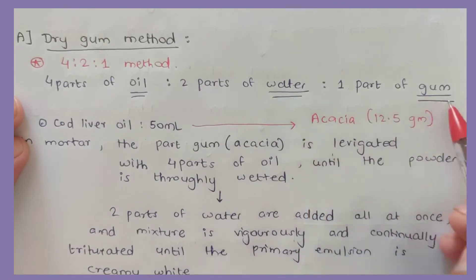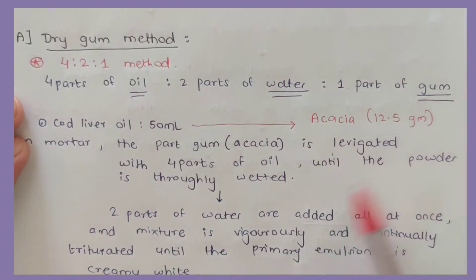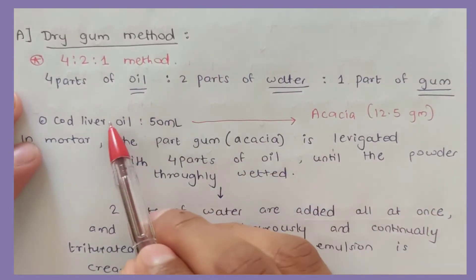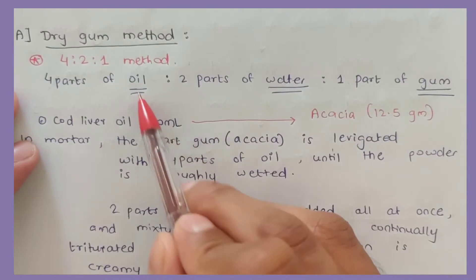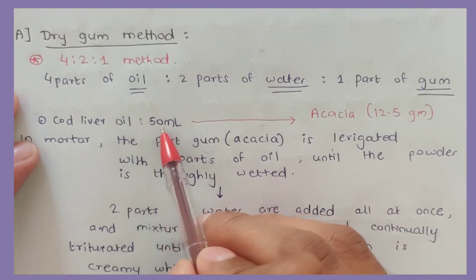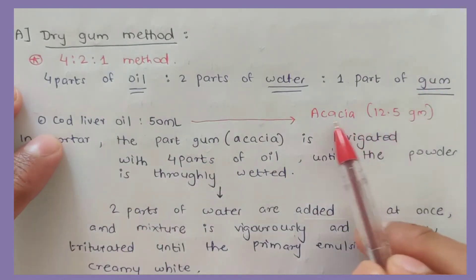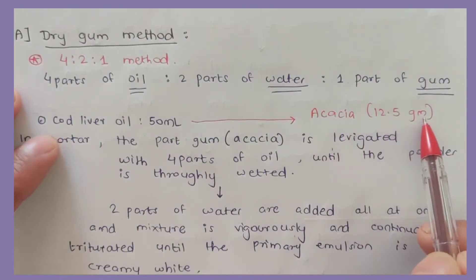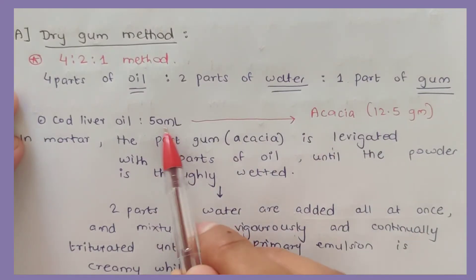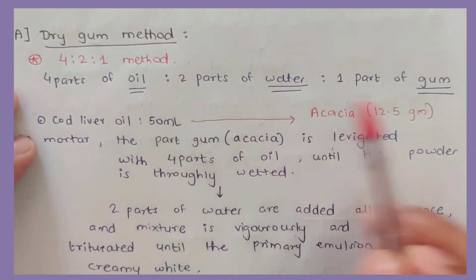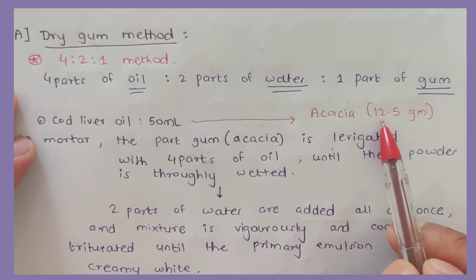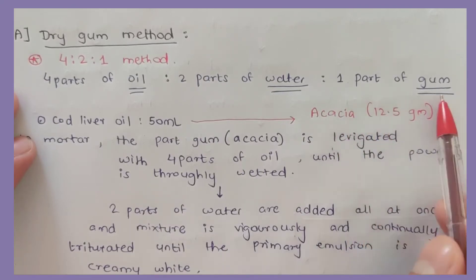For instance, if I'm taking cod liver oil 50 ml, it has 4 parts. So it has one part, which is acacia only 12.5 grams. I repeat: 50 ml divided by four parts equals 12.5 grams of acacia, which is the gum.